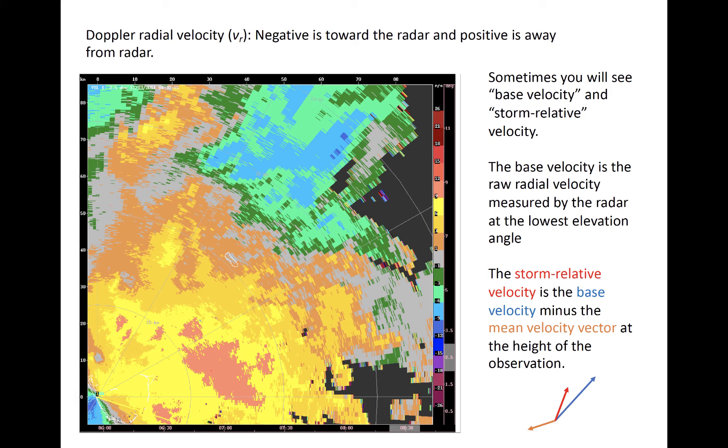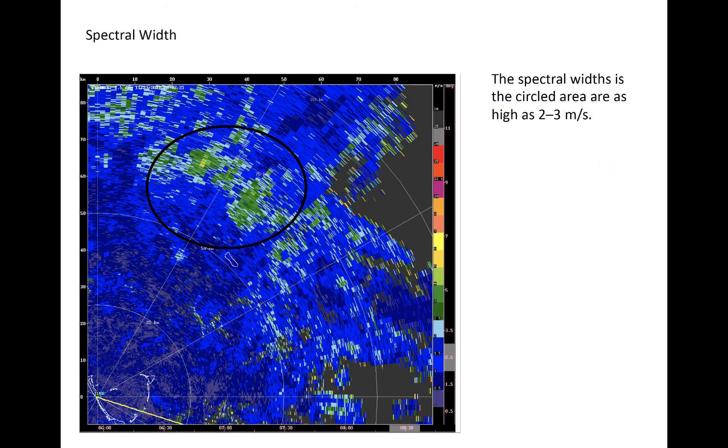We can use this in particular to look for storm scale circulations, and the storm relative velocity is particularly useful to look for things like rotation associated with mesocyclones or tornadoes. In the previous module, we also discussed spectral width. An example of a plan view of spectral width is shown here. Recall this value represents the spread in the distribution of radial velocities of targets in a volume. The green colors here denote spectral widths of 2 meters per second or greater.